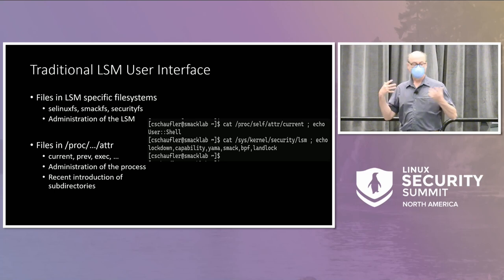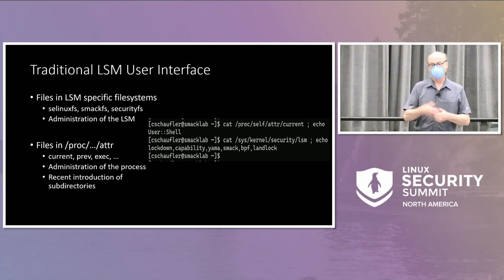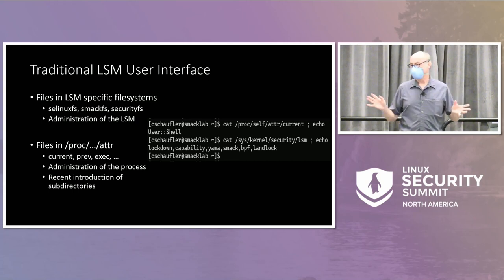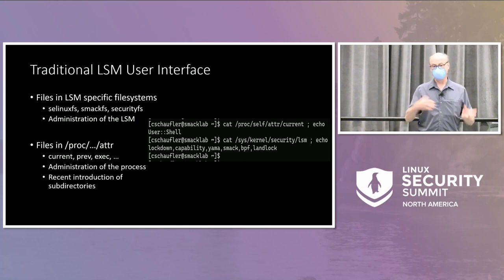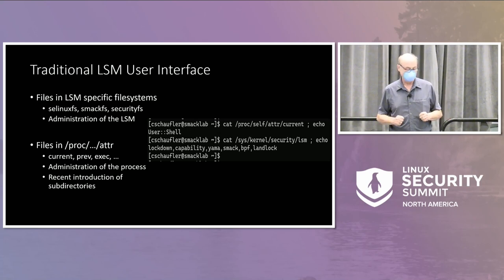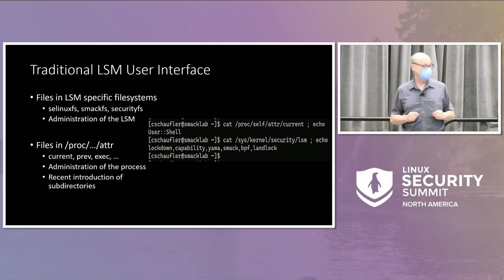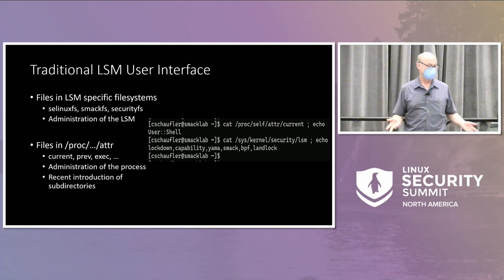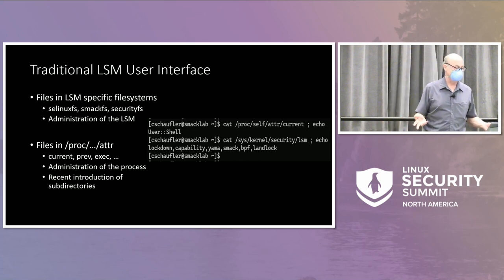For example, AppArmor puts a newline at the end because when you cat that interface it's more convenient that way. SELinux doesn't, SMAC doesn't, because it's just the raw information. So there's no consistency there, and certainly no guarantee of consistency.